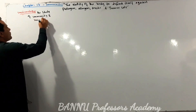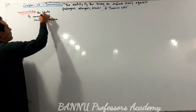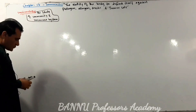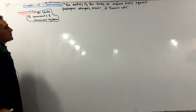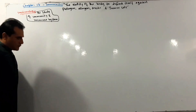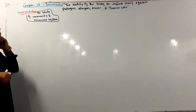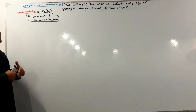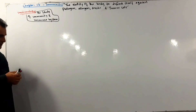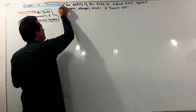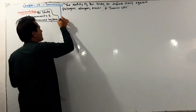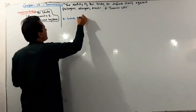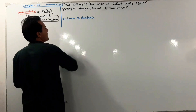The immune system, or immunity, is a medical branch which consists of three lines of defenses.